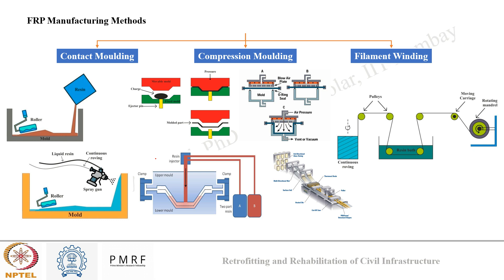We also discussed FRP manufacturing methods in three classifications: contact molding, where fiber and polymer are laid as alternate layers, pressed and rolled to form a composite; compression molding, where fibers and polymers are pressed between two molds under high pressure and temperature — including mesh die molding, gas-forming methods, and pultrusion; and filament winding, an automated continuous method useful for large-scale FRP production.